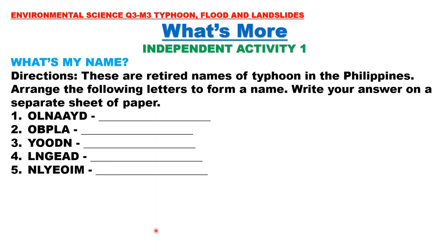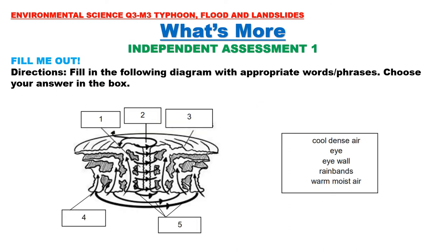Independent Activity One: 'What's My Name?' — These are retired names of typhoons in the Philippines. Arrange the following letters to form a name. Write your answers on your answer sheet. Independent Assessment One: 'Fill Me Out' — Fill in the following diagram with appropriate words or phrases. Choose your answers from the box. This shows the formation of a typhoon — identify each part: cool dense air, eye wall, rain bands, warm moist air.